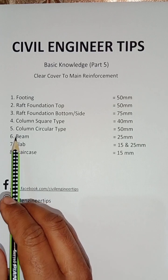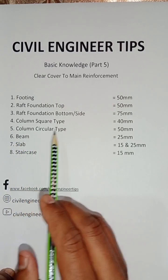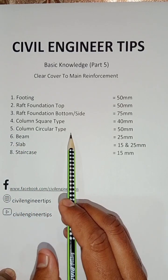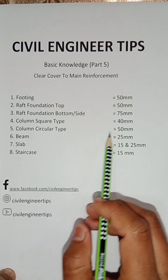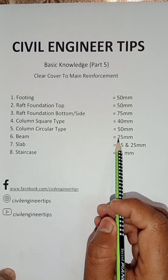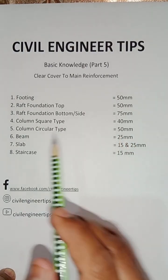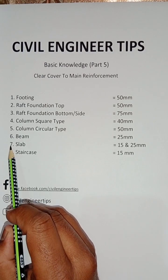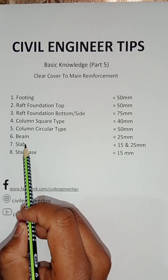Number six is beam clear cover. The beam is a main structural part after the column. Its clear cover is basically 25 mm.